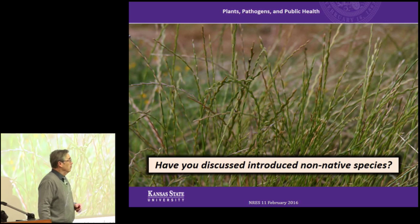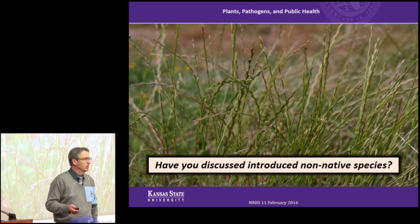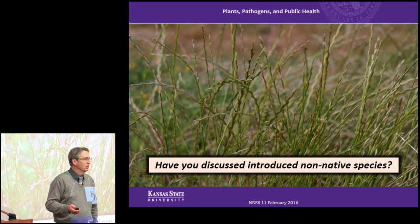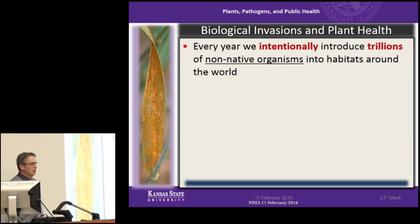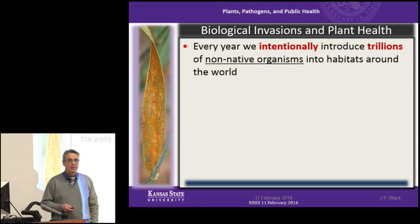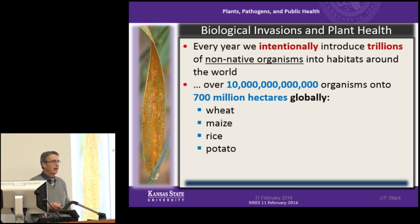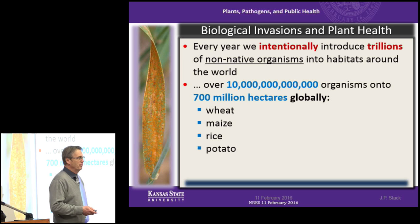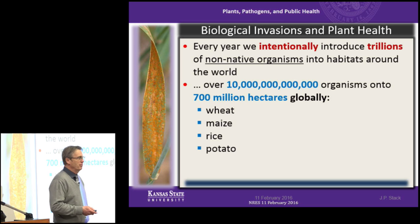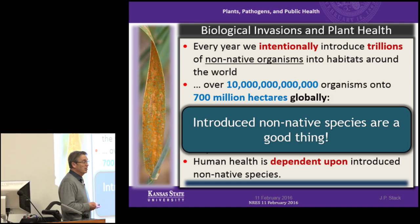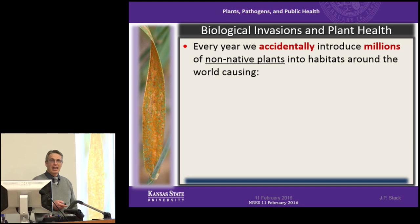Have you talked about non-native species in some of your classes? Every year we intentionally introduce trillions of non-native organisms into habitats around the world. That's over 10 trillion organisms onto over 700 million hectares globally. It's wheat, it's maize, it's rice, and it's potato — the crops that we depend upon for our food supply. They're not native to most of the acreage on which they're grown. Human health is dependent upon introduced non-native species. So introduced non-native species are a good thing.